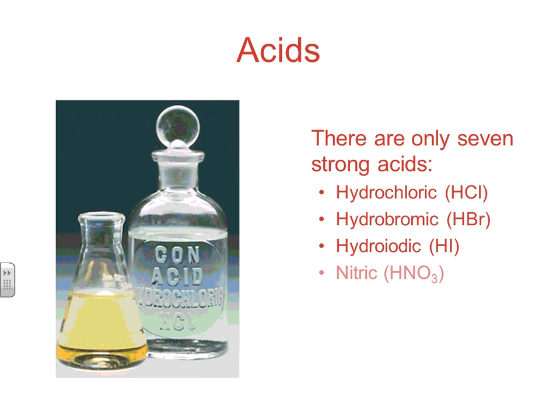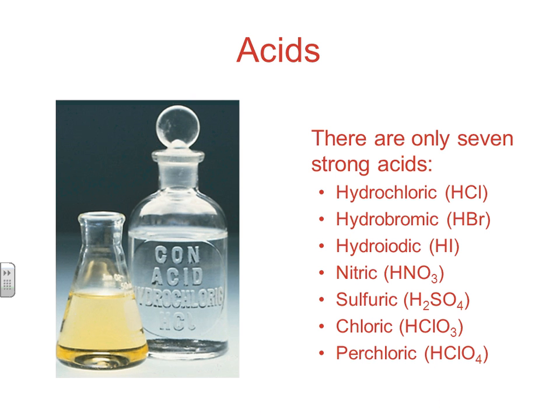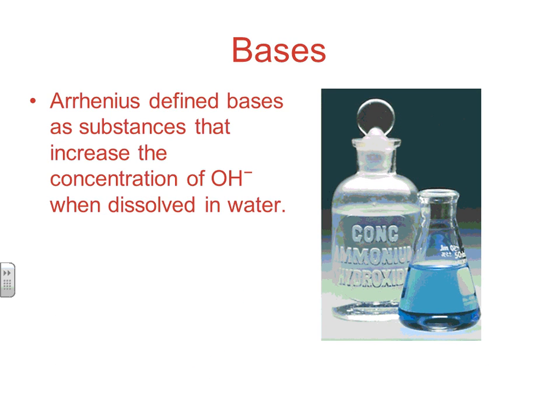There are only seven strong acids: hydrochloric acid, hydrobromic acid, hydroiodic acid, nitric acid, sulfuric acid, chloric acid, and perchloric acid. You need to memorize these. You already took one test that dealt with strong acids and bases and had to memorize them, and in this chapter and future chapters you'll need to know the strong acids. We already looked at this a little bit yesterday in the notes, so you have to know those seven.